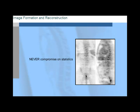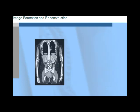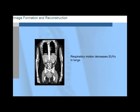Statistical reconstruction removes only inconsistent noise, which doesn't account for all the noise. Also, don't forget that respiratory motion decreases standard uptake values, or SUVs, inside of the lungs.